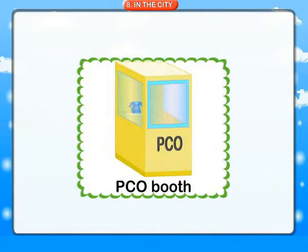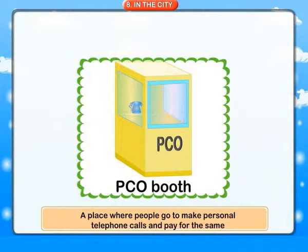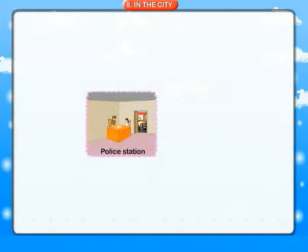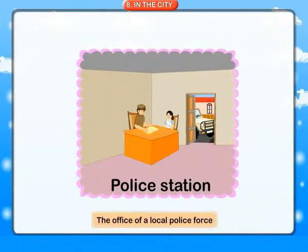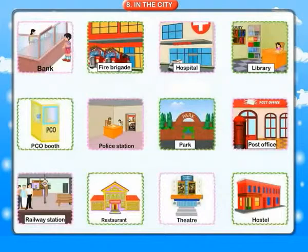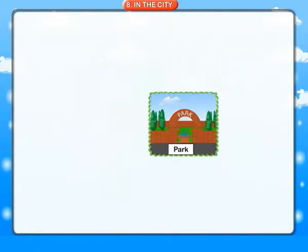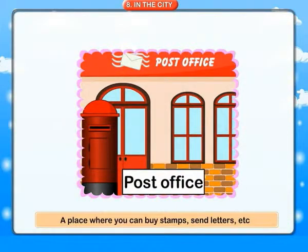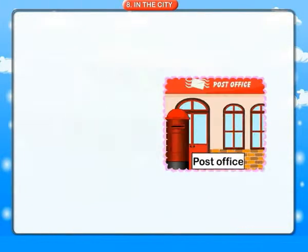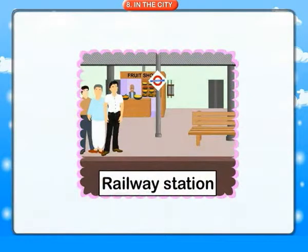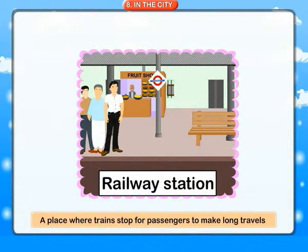P.C.O. booth: a place where people go to make personal telephone calls and pay for the same. Police station: the office of a local police force. Park: an area of public land where people go to walk, play and relax. Post office: a place where you can buy stamps, send letters, etc. Railway station: a place where a train stops for passengers to make long travels.